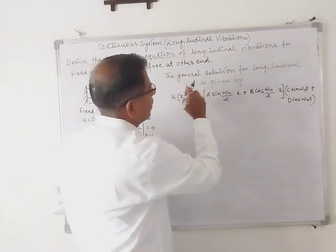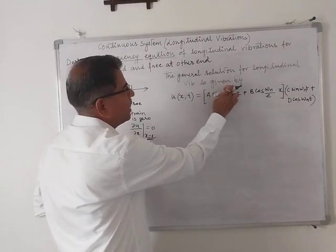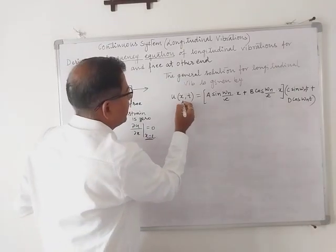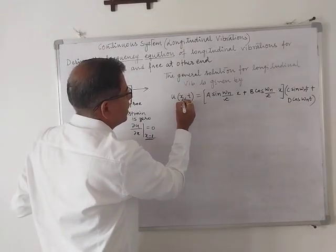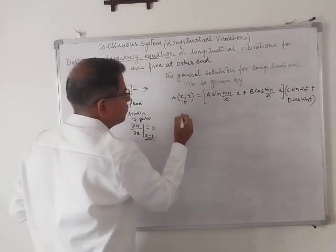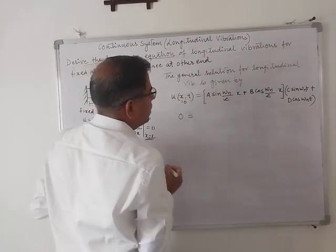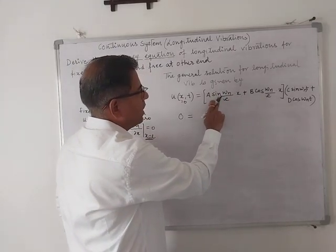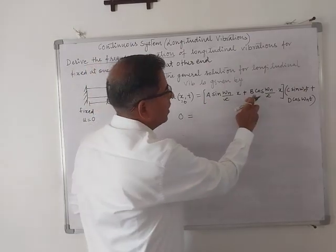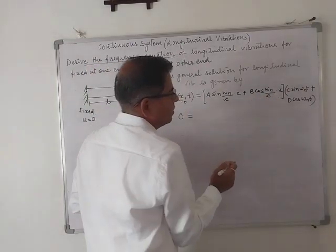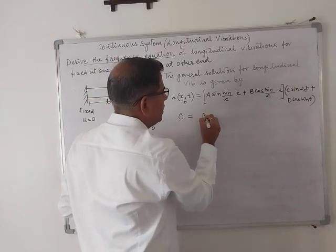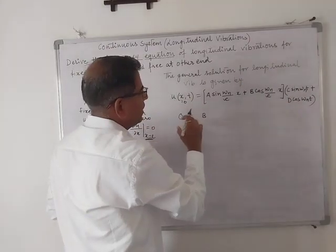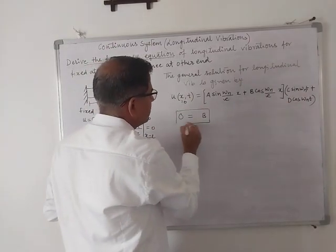The general solution for longitudinal vibration is given by u(x,t) = [A sin(omega_n/c * x) + B cos(omega_n/c * x)] * [C sin(omega_n * t) + D cos(omega_n * t)]. At x equal to zero, this becomes zero equals B into cos zero, which is one, so the value of B is zero.